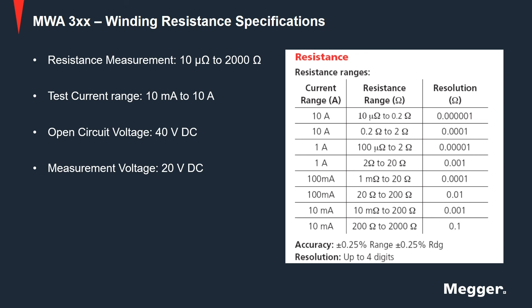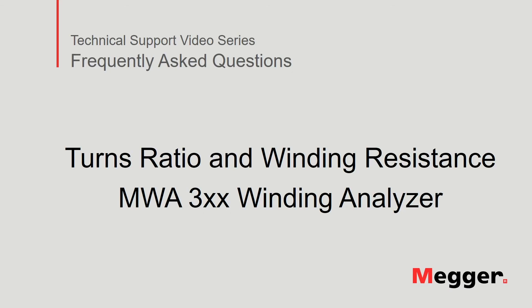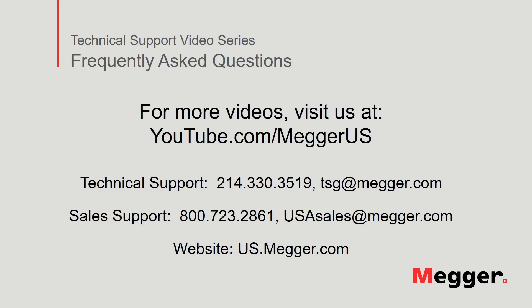More information on the MWA can be found on the Megger website at us.megger.com. This concludes turns ratio and winding resistance measurement using the MWA 300 series winding analyzer. Visit the Megger YouTube channel for more videos including technical webinars, product overviews, and other how-to presentations. Contact us for questions or more information about this topic or for any support you may need for your electrical testing.